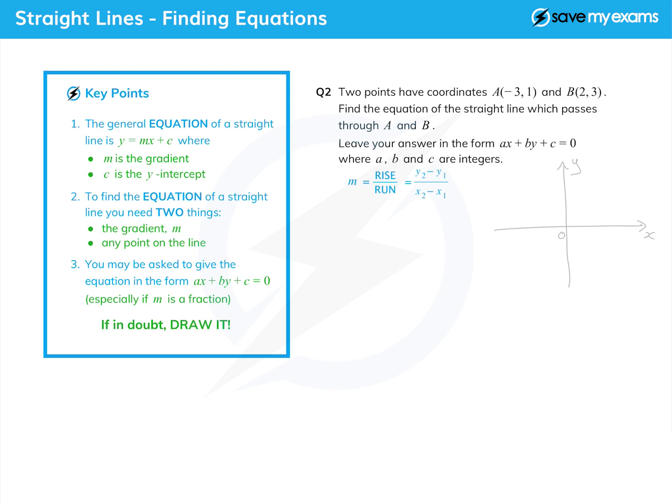Point A has x equals minus 3, y equals 1, and point B has x equals 2, y equals 3, so that's going to be about there. My line is going to be something like that. Now why have I sketched that?